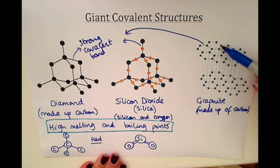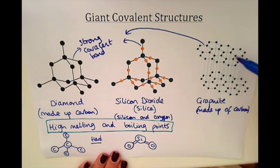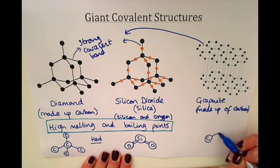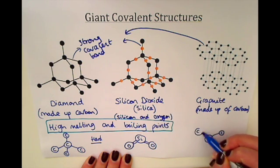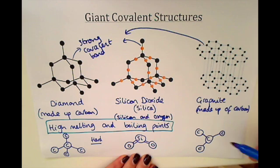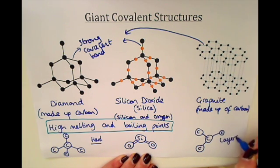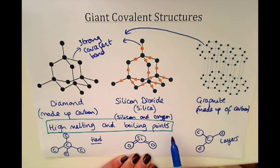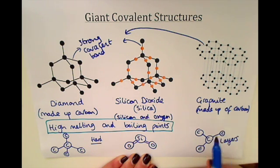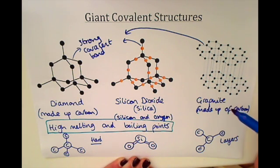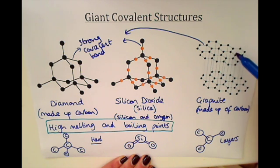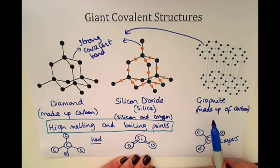In graphite, if you look closely at the structure, you can see that one carbon is bonded to three other carbons. This means graphite forms layers that are free to slide over each other. That's why a pencil leaves a line on paper — it's the graphite layers sliding over each other. Graphite is what's inside your pencil, and it's exactly this structure of one carbon bonded to three others that allows those layers to slide.